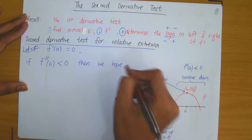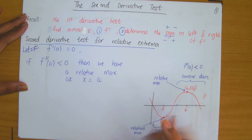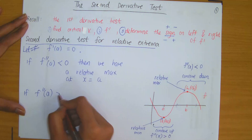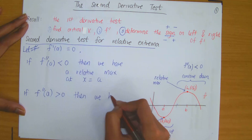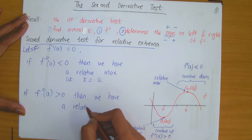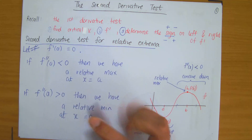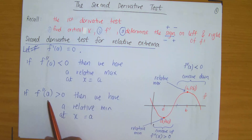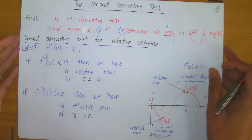Similarly, if the second order derivative evaluated at x equals to a is positive, that implies it's concave up, which means we have a relative minimum. In summary: if the second derivative at a point is negative, you have a relative maximum; if it's positive, you have a relative minimum. Keeping this in mind, let's go on to the next question: use the second derivative test to find the relative extrema of the following function.